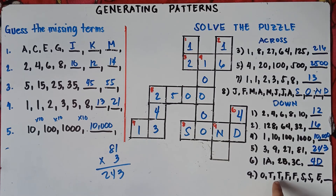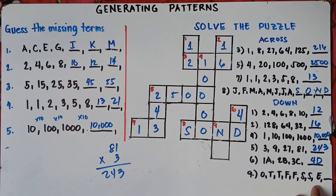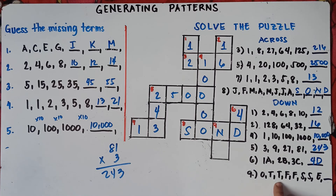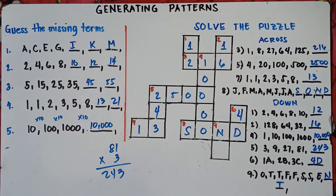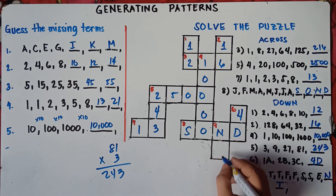For number 9 down: O, T, T, F, F, S, S, E. These are the first letters of numbers: One, Two, Three, Four, Five, Six, Seven, Eight. So the next are 9 and 10, giving us N and T — Nine, Ten.